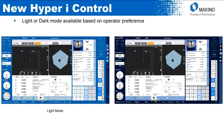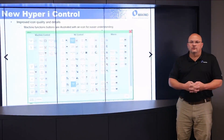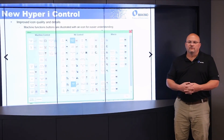Next is the light and dark mode available based on operator preference. This can also make a difference based on shop lighting - if it's too bright in light mode, you couldn't see the screen very well, so you have the option. Another new feature is the improved icon quality and details: the machine function buttons are illustrated next to the actual wording of the function to make it easier to understand what that particular function does.